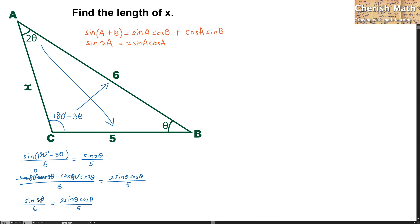For sin 3 theta here, it is the same as sin theta plus 2 theta, while the rest over 6 equals 2 sin theta cos theta divided by 5. I will just have to follow suit, and this turns out something like this.